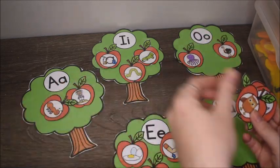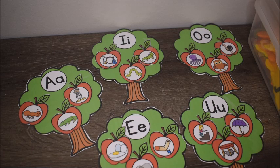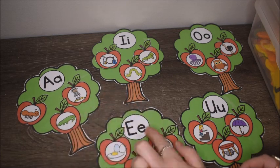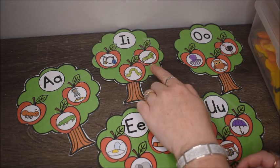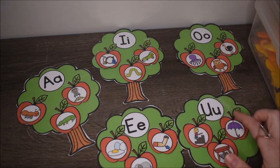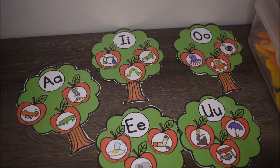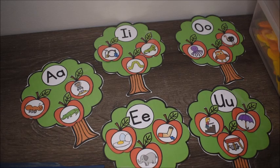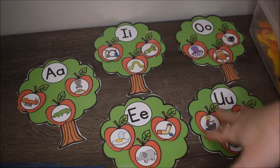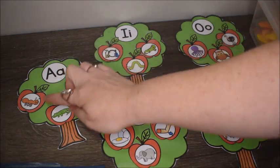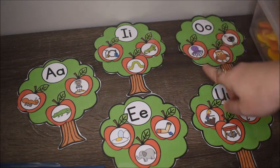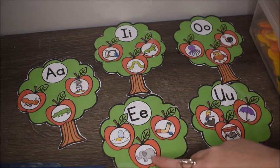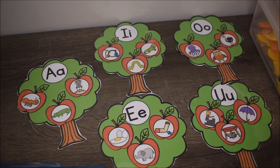One thing we always do when practicing vowel sounds is repeat our chant or song with the sounds: 'A says ah, E says eh, I says ih, O says oh, U says uh — I know my vowels A E I O U.' We also do it with pictures: A for ant, I for iguana, O for octopus, E for elephant, U for umbrella — I know my vowels A E I O U.